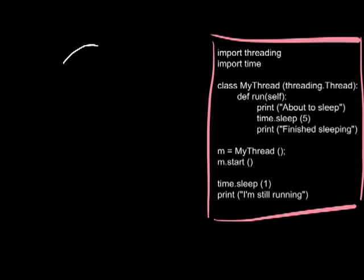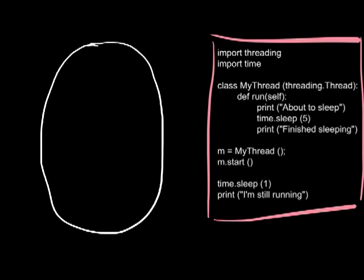I'll go through how this looks in the process space. Again, what we have is our big blob which is our process. Because all this is just the definition of a class, we skip that and start executing the code below. Our first thread starts — this is just because we've run the program. It's created a single global variable, which is an object of type MyThread. At this point we haven't started our thread, so nothing's actually happening yet — we only have a single thread of execution.